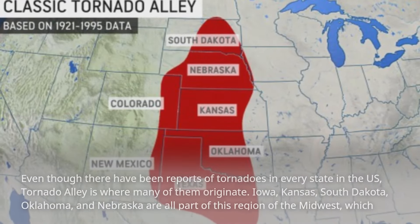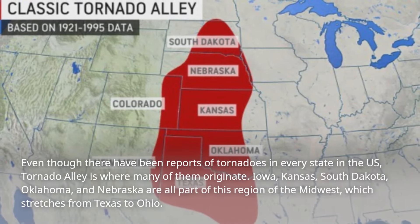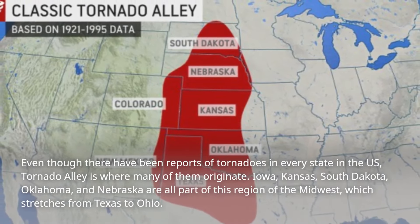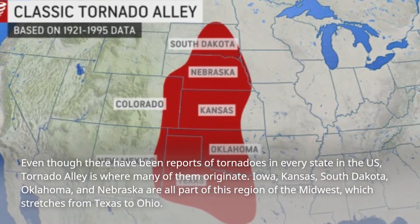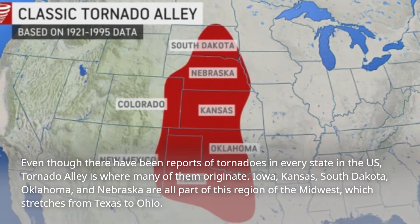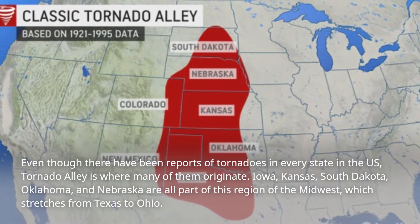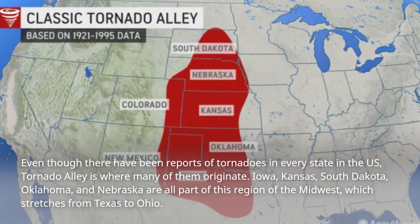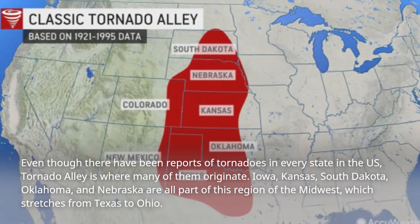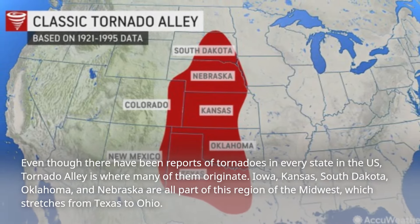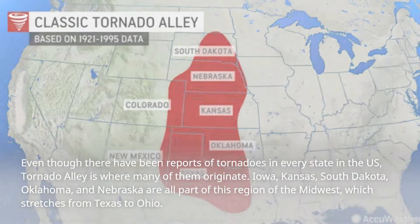Even though there have been reports of tornadoes in every state in the U.S., Tornado Alley is where many of them originate. Iowa, Kansas, South Dakota, Oklahoma, and Nebraska are all part of this region of the Midwest, which stretches from Texas to Ohio. These states are in the path of both cool air coming from the Rocky Mountains and warm, humid air coming from the Gulf of Mexico. Tornadoes are frequently created when the warm and cool air streams collide.